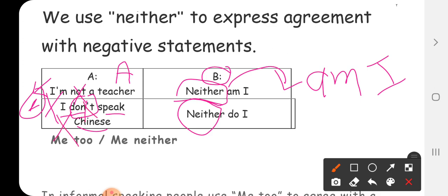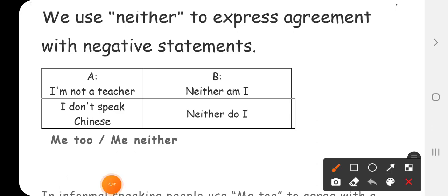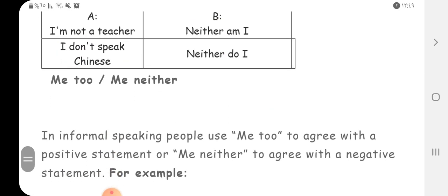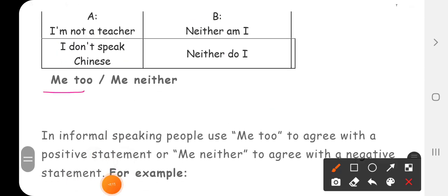I don't speak Chinese. I don't speak Chinese, neither do I. Neither, we cross not and just put it, neither do I, and I just wrote it neither do I. Okay? I don't speak Chinese, neither do I. Okay, cross not.